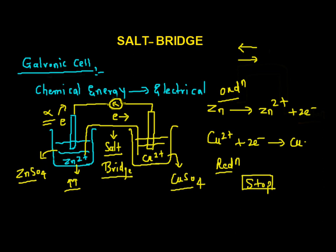In order to avoid this, we use the salt bridge. As the cell starts working, the concentration of Zn2+ ion will increase in the anodic half cell and will not allow the electrons to move rightward into the cathodic compartment. So in order to neutralize the concentration of Zn2+ ion — basically it develops a potential between the electrode and the solution which does not allow electrons to flow — we need to neutralize the charge over the Zn2+ ion by passing an oppositely charged ion placed inside the salt bridge.